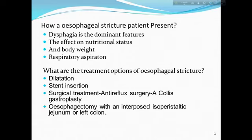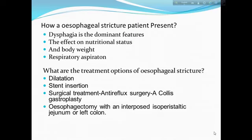How does an esophageal stricture patient present? Dysphagia is the dominant feature. Effects include impaired nutritional status, loss of body weight, and respiratory aspiration. Treatment options for esophageal stricture include endoscopic dilatation, stent insertion, surgical treatment, anti-reflux surgery, Collis gastroplasty, and esophagectomy with interposed isoperistaltic jejunum or left colon.